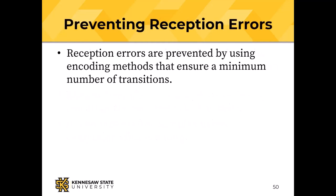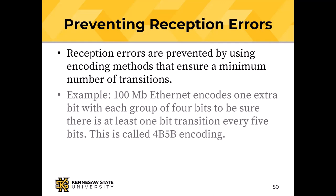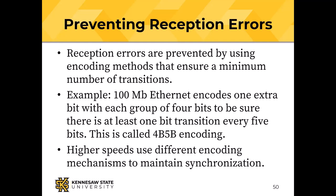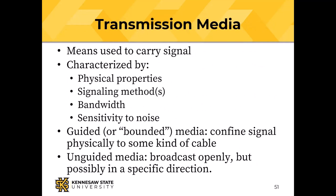To prevent reception errors, synchronous transmission needs an encoding method ensuring a minimum number of transitions per unit of time. 100 Megabit Ethernet uses 4B/5B encoding — one extra bit for every four bits — guaranteeing at least one transition every five bits, with 25% overhead. Higher speeds require different encoding mechanisms; Manchester encoding is one such approach.